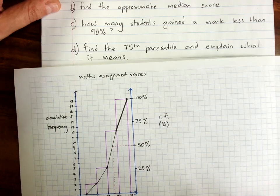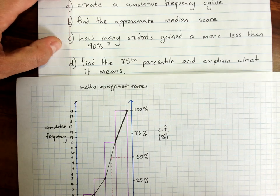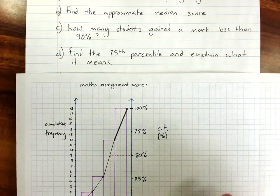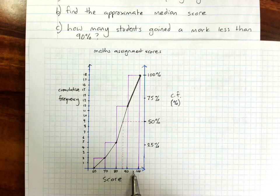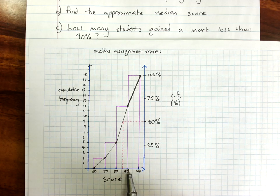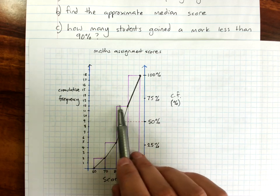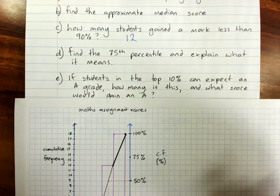Next question. How many students gained a mark less than 90%? That's easily read from the histogram or the table. You go to your 90% and read the cumulative frequency up to there. So, 12 students gained a mark of less than 90%.